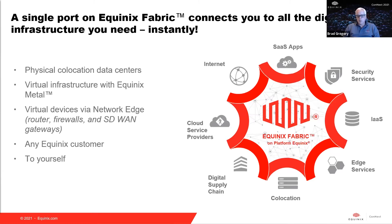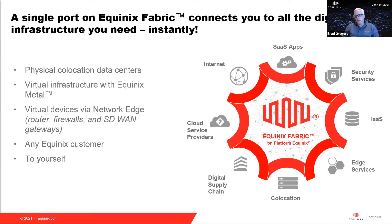There are two ways to ingress into the fabric and access that rich ecosystem: co-location and edge services. Co-location is straightforward — you buy a cabinet, put your physical gear in it, and start creating connections. Edge services are virtual services; Network Edge is one of them. If you want network agility — minutes instead of months — edge services let you consume cloud services very quickly. Once you ingress into one place, you can spray out across the whole fabric.